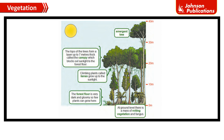The tops of the trees form a layer up to 7 m thick called the canopy, which blocks out sunlight to the forest floor. Climbing plants called lianas grow up toward the sunlight. The forest floor is very dark and gloomy, so few plants can grow here. At ground level, there is a mass of rotting vegetation and fungus.